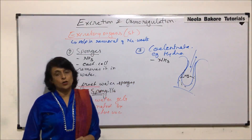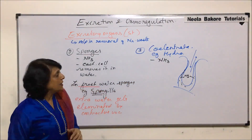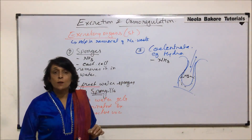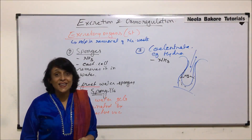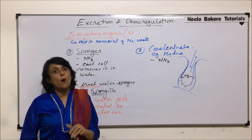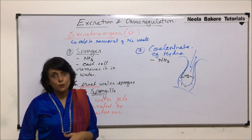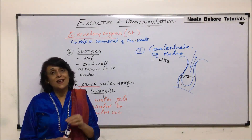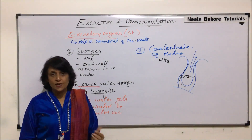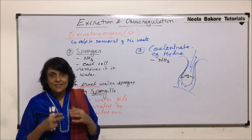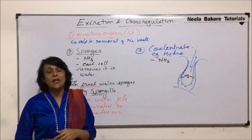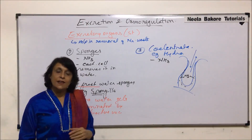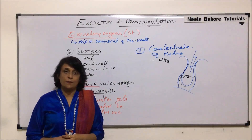In the next segment we will be talking about the next group, that is platyhelminthes or flatworms, where the excretory structures are slightly specialized. They are inside the body and are known as flame cells.